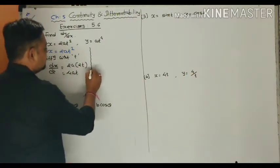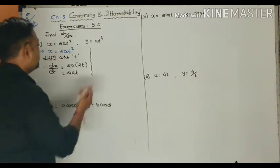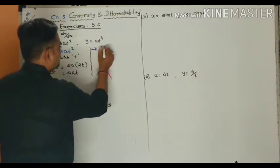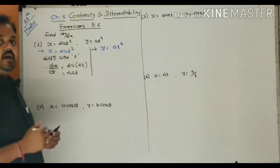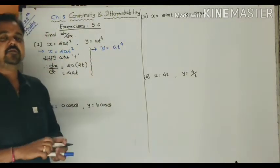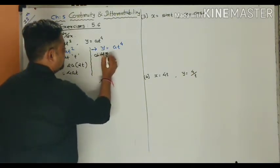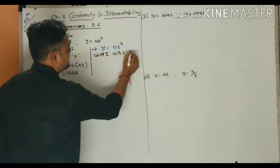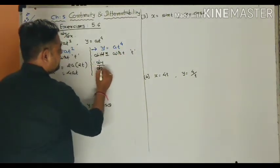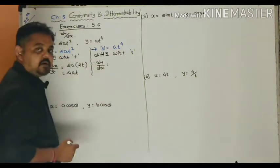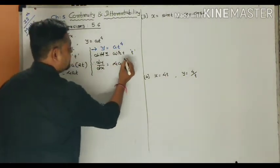Next, the second function is y = at⁴. Differentiation with respect to t gives dy/dt. Here a is constant and the derivative of t⁴ is 4t³, so dy/dt = 4at³.